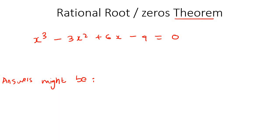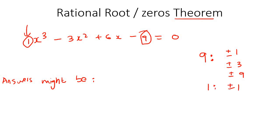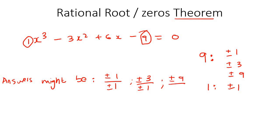What you do is take the constant term at the end and the leading coefficient in the front. Start with the 9 — find all the factors of 9. The factors of 9 could be plus or minus 1, plus or minus 3, and plus or minus 9. Then find all the factors of the leading coefficient, which would just be plus or minus 1. To find all the different possible answers, divide all of these factors by all of those ones. So that could be plus or minus 1 over 1, plus or minus 3 over plus or minus 1, and plus or minus 9 over plus or minus 1. Those are all the possible answers we might get.